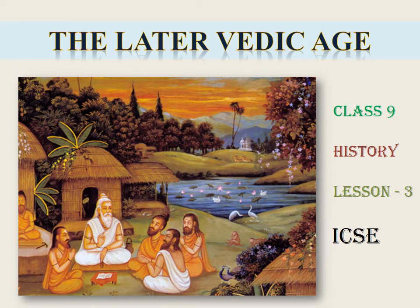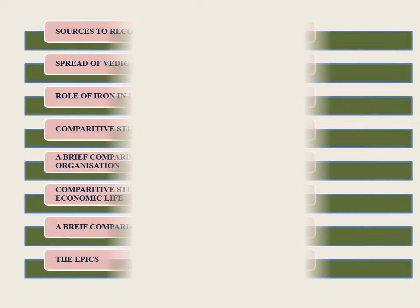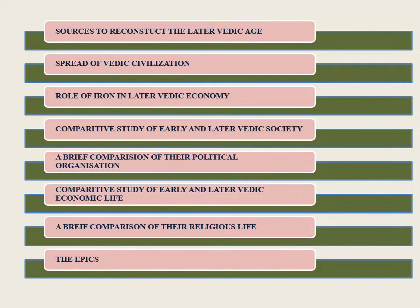The second part of the chapter of Vedic Age is the Later Vedic Age. The subheadings of the Later Vedic Age are: Sources to Reconstruct the Later Vedic Age, Spread of Vedic Civilization, Role of Iron in Later Vedic Economy, Comparative Study of Early and Later Vedic Society, A Brief Comparison of Their Political Organization, Comparative Study of Early and Later Vedic Economic Life, A Brief Comparison of Their Religious Life, and The Epics.